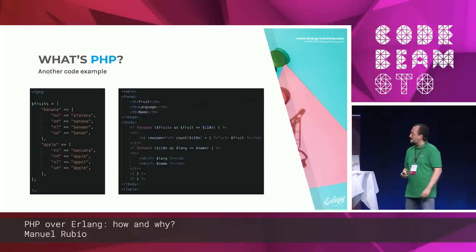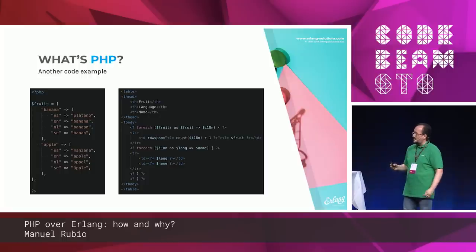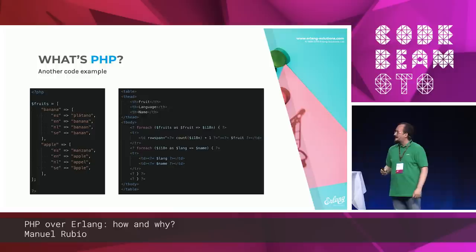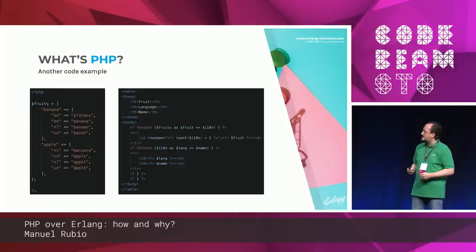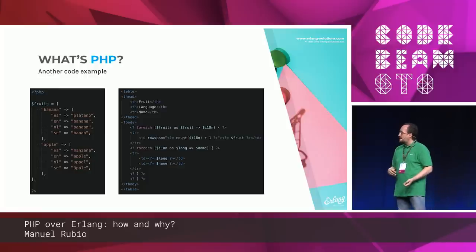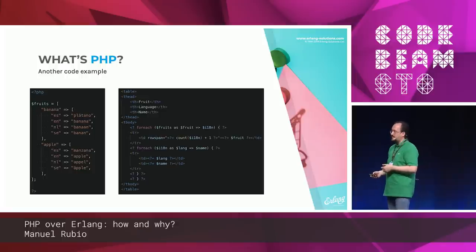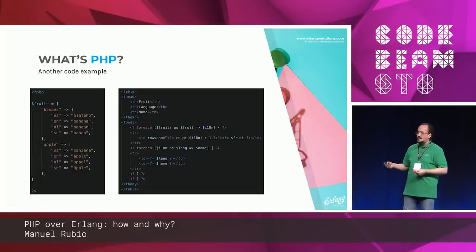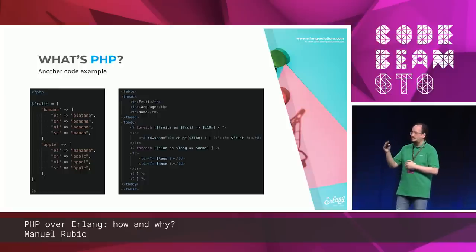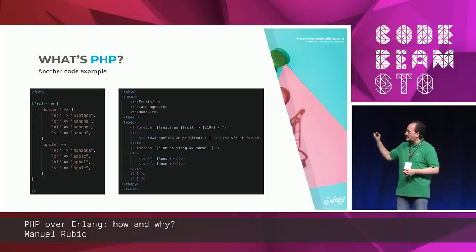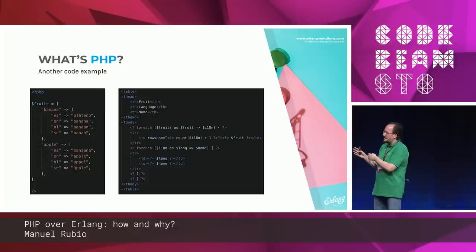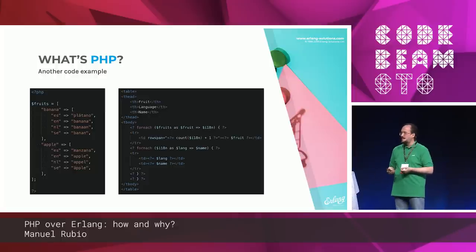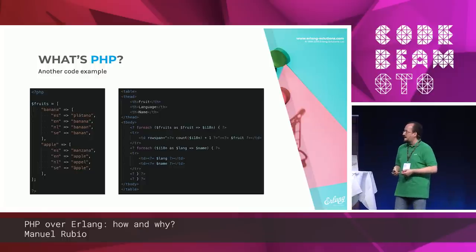Here you can see an array that is a representation of a hash inside an array — that's the flexible part of PHP data implementation. And in the second box, you have a normal use of a web page — some HTML with PHP tags inserted. The mission is: if we can get that code running on top of Erlang, it could be easier to get something functional with Erlang and PHP working together.